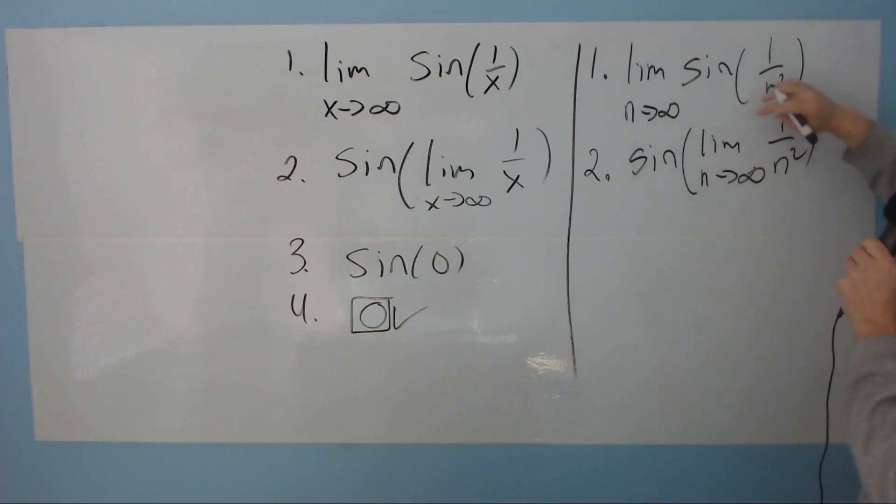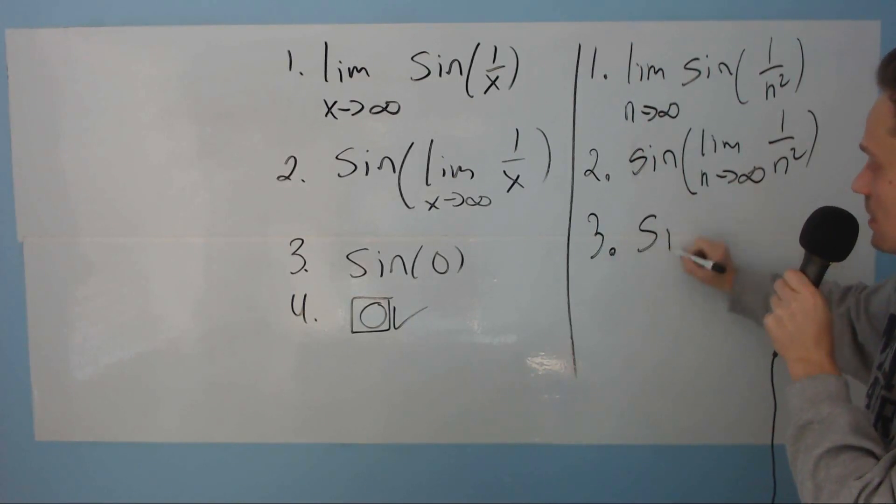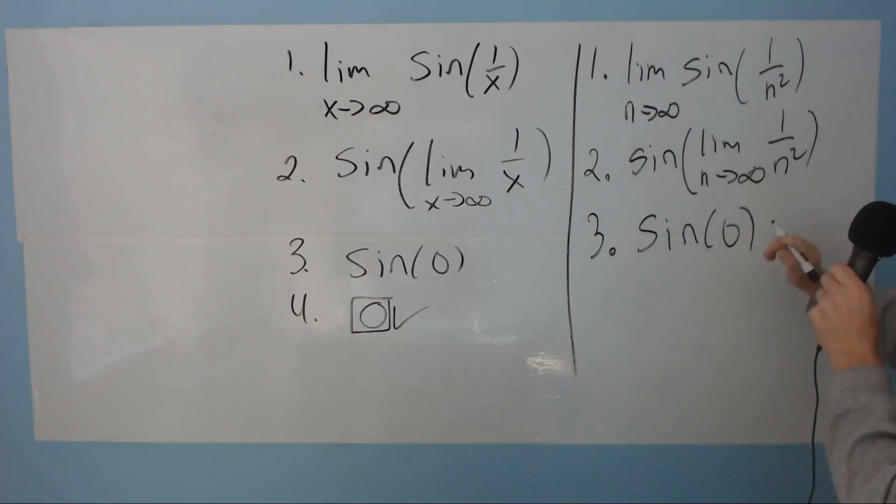Hopefully by now you know that the limit of the inner expression here will be equal to 0. So you're going to end up with the same thing basically, the sine of 0. Again, by unit circle or memory, you know that this is equal to 0, and that is the correct value.